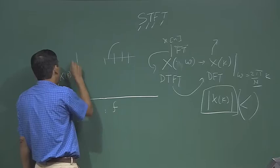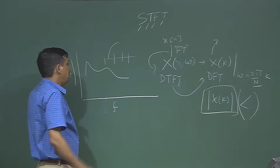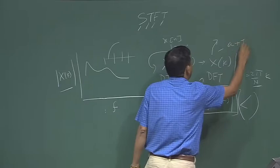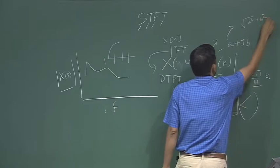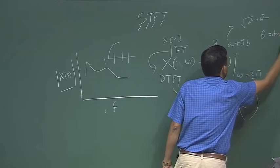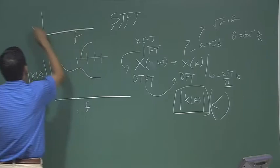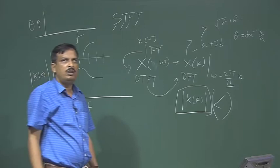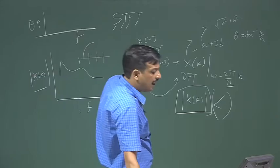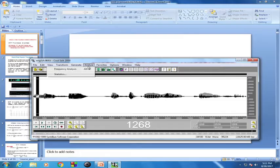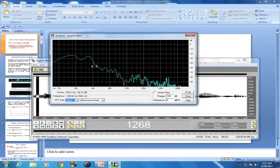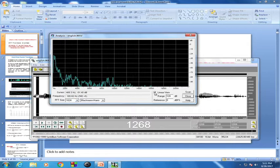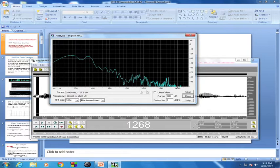If x(k) is in the form a + jb, then the magnitude spectrum is √(a² + b²). If it is the phase spectrum, then θ = arctan(b/a). If I plot θ against frequency, I call that the phase spectrum. So in frequency analysis we find two kinds of spectra: one is phase spectra and another is magnitude spectra. The frequency scale can be linear or log scale, and the amplitude axis represents the magnitude of each frequency component.